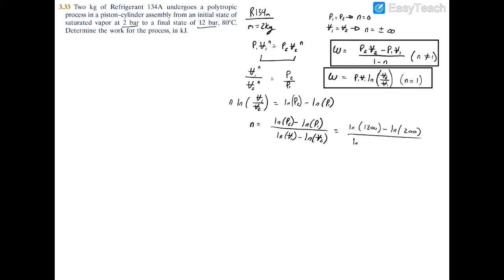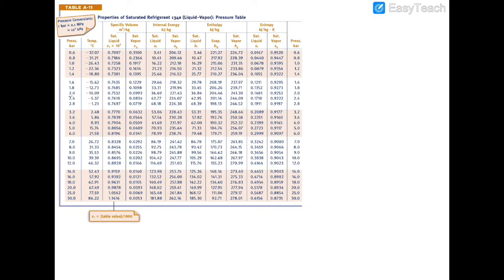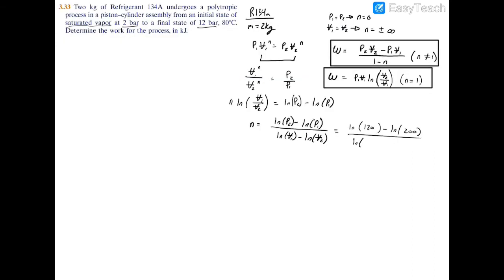The natural log of volume one, which we don't actually have. However, at state one we're told we have saturated vapor at two bar. I'll turn to the saturated table, and at two bar saturated vapor VG we have a specific volume of 0.0993 meters cubed per kilogram. Volume equals mass times specific volume, which equals two times 0.0993, so V1 equals 0.1986 cubic meters.